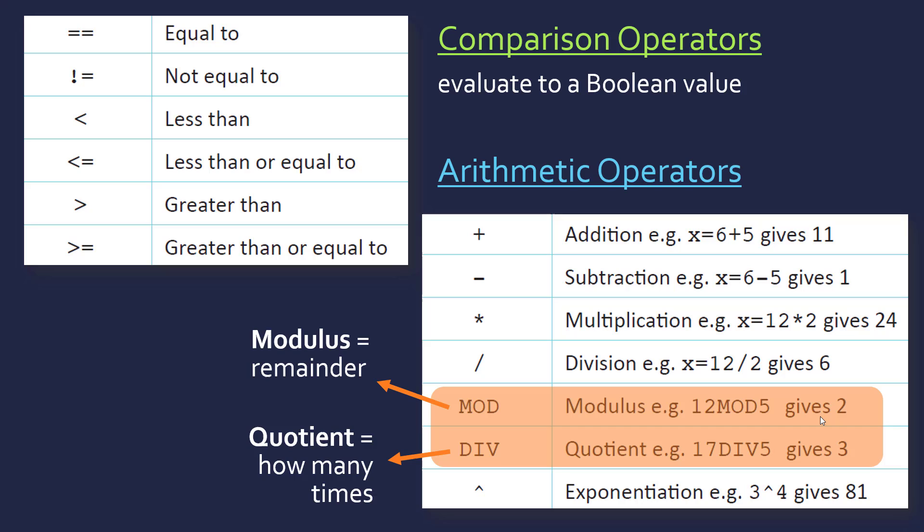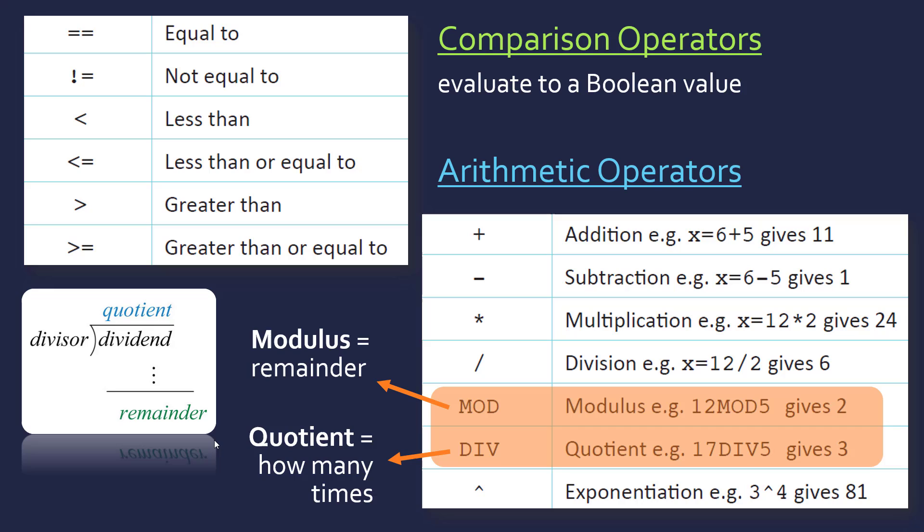Another example, say 25 mod 4. 4 goes into 25 6 times, to give 24. Then it's got one remainder left over, so 1 would be returned from that.